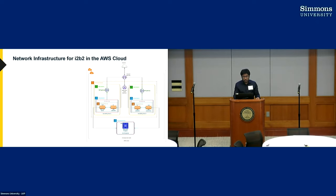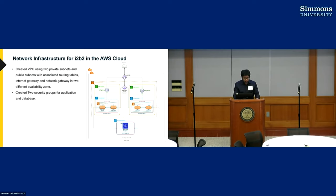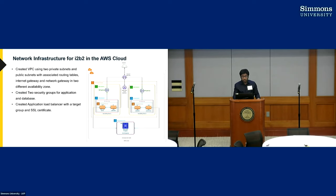This is the overall network infrastructure of I2B2 in the AWS cloud. We created a VPC using two private and public subnets with associated routing tables, internet gateway, and NAT gateway across different availability zones. VPC allows us to use AWS resources in a virtual network. Then we created two security groups for the application and database. Security groups act as a firewall for associated containers and control inbound and outbound traffic at the container instance level. Then we created an application load balancer with a target group and SSL certificate.